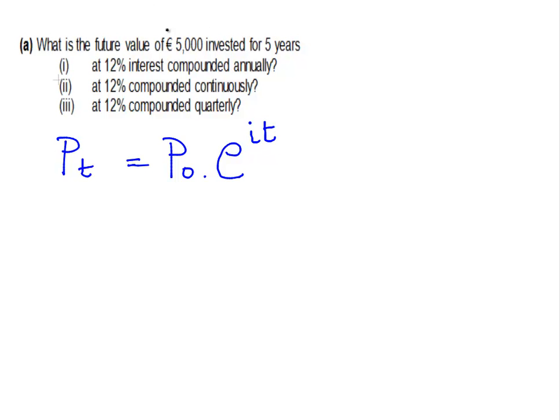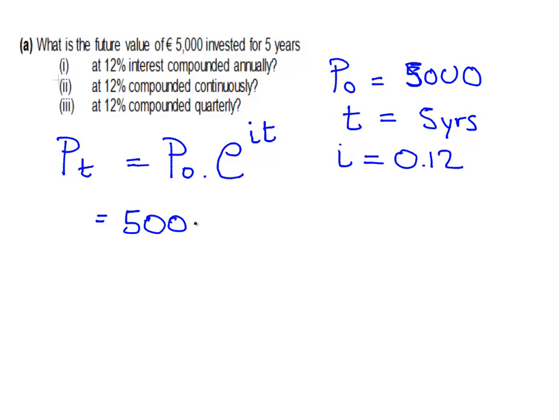Now, we're using all the same values here again. pt is what we're looking for. p0 is 5,000. We're dealing with five years. t equals five years. And i equals 0.12. So what we're going to do is actually work this out. p0 is 5,000 times the exponential of 0.12 times 5. That's equal to the 5,000 times the exponential of 0.6.